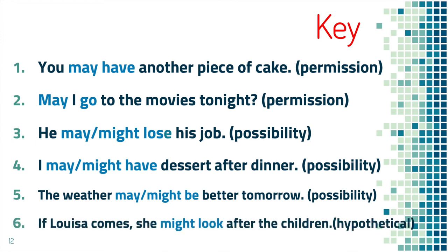And number six: if Luisa comes, she might look after the children — hypothetical. Notice that three, four, and five are all examples of possibility, and you can choose either may or might.